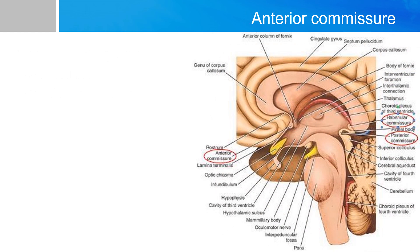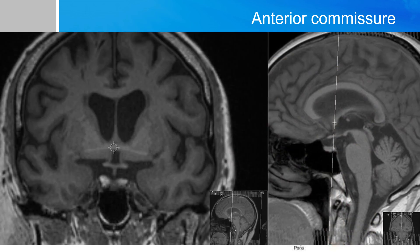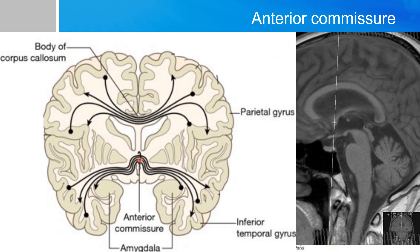The anterior commissure is a white matter tract that connects the two temporal lobes of the hemispheres across the midline. It's easily identifiable on a mid-sagittal view by this small nubbin right there. On an MRI scan, if you take a coronal slice right across the anterior commissure, you'll see a white band of white matter tracts connecting the two hemispheres. As this diagram shows, the anterior commissure connects between the two temporal lobes.